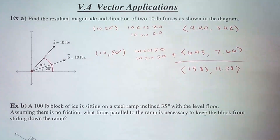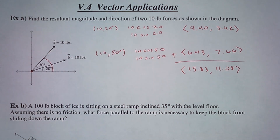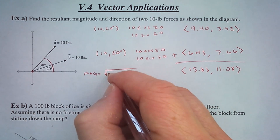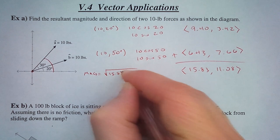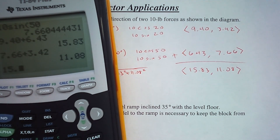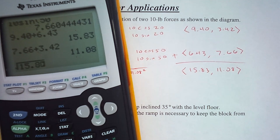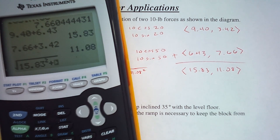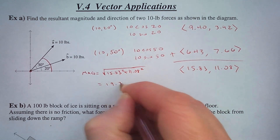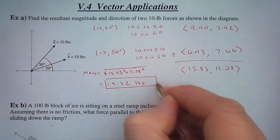Here is the resulting vector in component form. Now I want to know the magnitude and the direction of the combination of these two forces. For the magnitude, we do the square root of the x component squared plus the y component squared: the square root of 15.83 squared plus 11.08 squared, and we get 19.32. So that means there is 19.32 pounds of force being applied to this object.